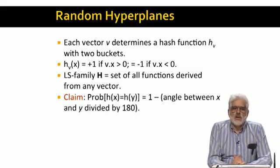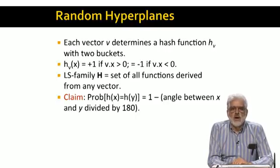Analogous to the theorem about minhash functions and Jaccard distance, we have the following theorem. For any of the random hyperplane hash functions, the probability that h of x equals h of y is 1 minus 1 over 180th of the angle between x and y.